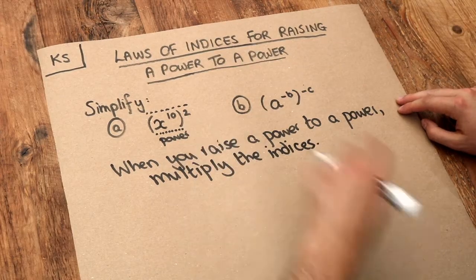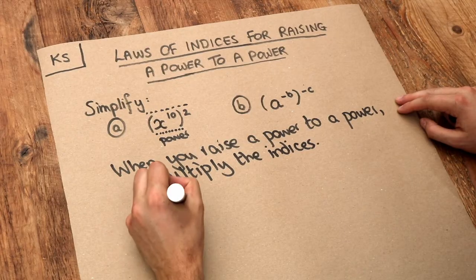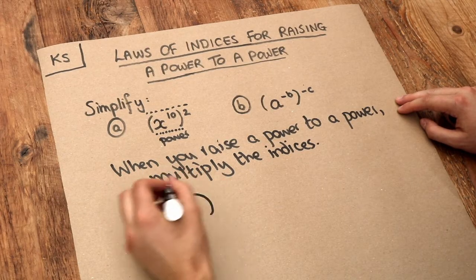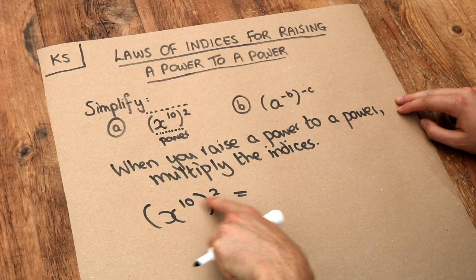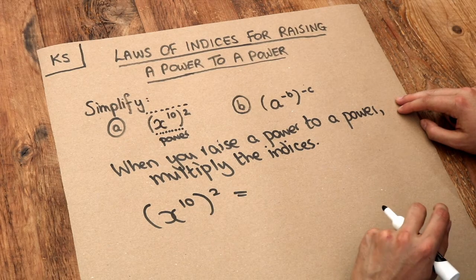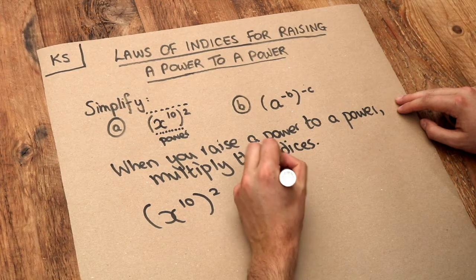So these little numbers up here are going to be multiplied together. So when we have x to 10 and we then square that, we multiply these indices together. 10 times 2 is 20, so it's x to the power of 20.